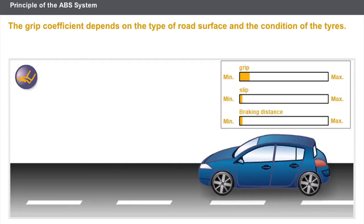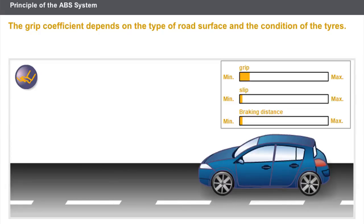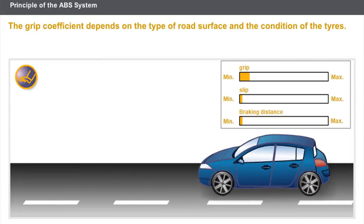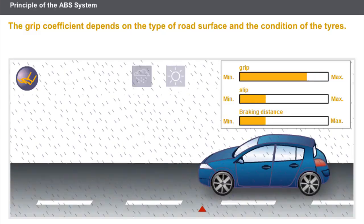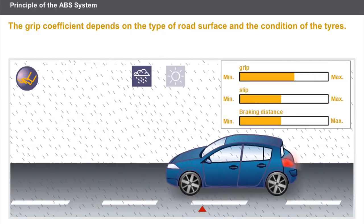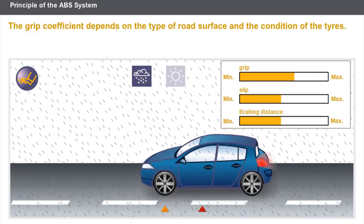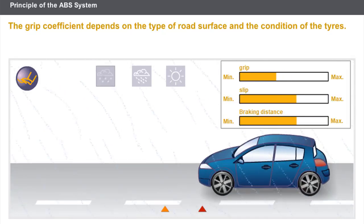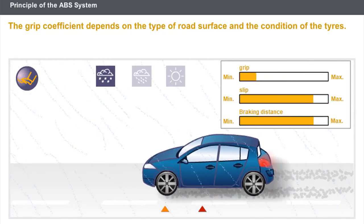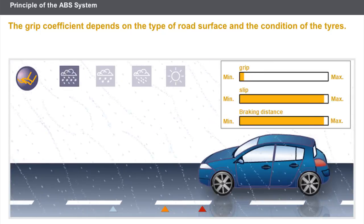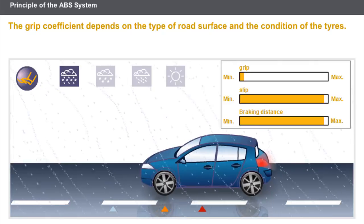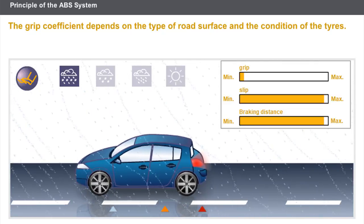Now let's take a look at the different conditions of grip. On dry concrete, the grip coefficient is at its maximum, and the slip is almost zero. On a wet road surface there is less grip, and the slip value increases. On fresh snow, the grip coefficient drops, and the slip value is very high. On ice, the grip coefficient is almost zero, and the slip value is at its maximum level.